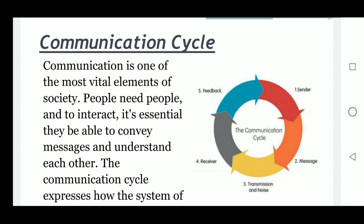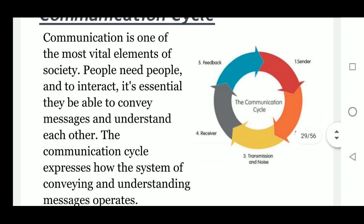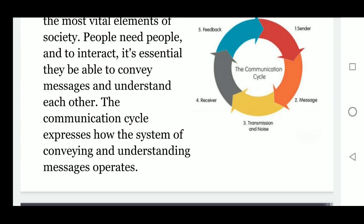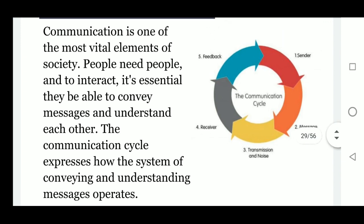Next we are going to learn about the communication cycle. Communication is one of the most vital elements of society. People need to interact, and it is essential they be able to convey messages and understand each other. The communication cycle expresses how the system of conveying and understanding messages operates, and a diagram of the communication cycle is given.